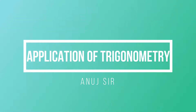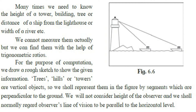Welcome to my channel. Today we are going to discuss the application of trigonometry. Many times we need to know the height of a tower, a building, or a tree, or find an object at a particular distance. We cannot measure them directly, but we can find them with the help of trigonometric ratios. We have studied six trigonometric ratios: sin θ, cos θ, tan θ, cosec, sec, and cot θ.